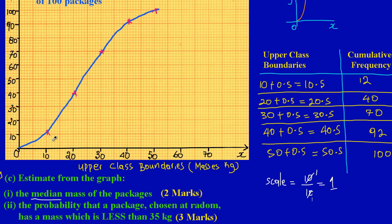Or you could use a flexi curve for those of us who use that. You can get that in the bookshops. Now here in part C, we have in our graph they are asking us to estimate from the graph number one, the median mass of the packages.